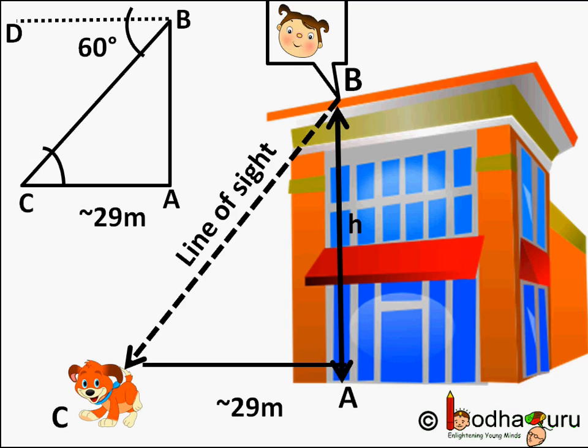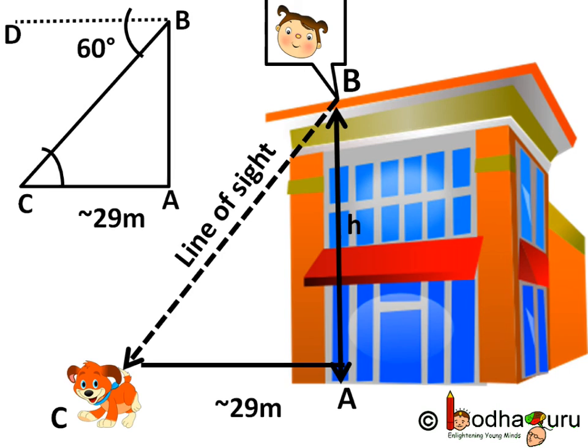So solving problems with the angle of depression, that is when the observer is looking down, is like solving problems with angle of elevation when the observer is looking up.